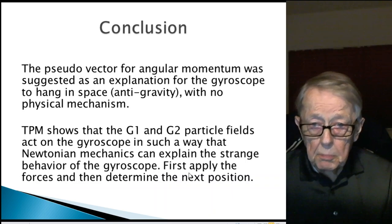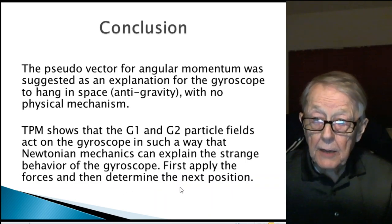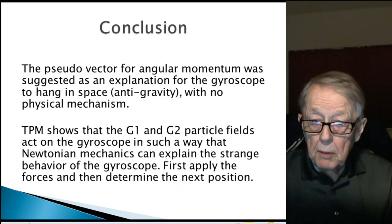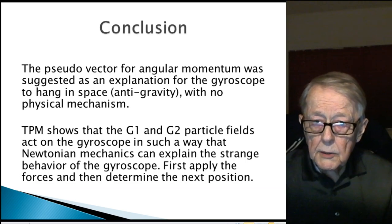The particle model shows that the G1 and G2 particle fields act on a gyroscope in such a way that Newtonian mechanics can explain the strange behavior of the gyroscope, that is why it hangs in space. It hangs there because the next position in the next microsecond or what interval you take, it stays there because the speed dominates and gravity is a smaller portion of the analysis. You first apply the forces, you determine the next position, you find out it's going to stay where it is. It's going to hang there in space, and that can be explained by the G1 particle fields, G1 gravity, G1 inertia, and so on.